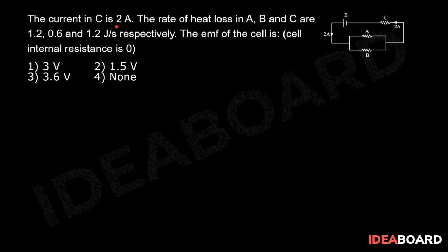The current in C is 2 ampere. The rate of heat loss in A, B, C are 1.2, 0.6 and 1.2 joule per second respectively. The EMF of the cell is given that cell internal resistance is 0.